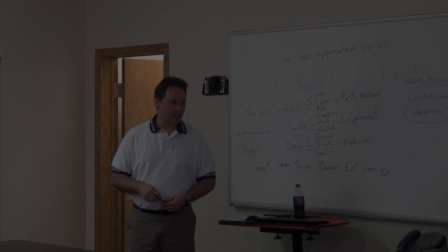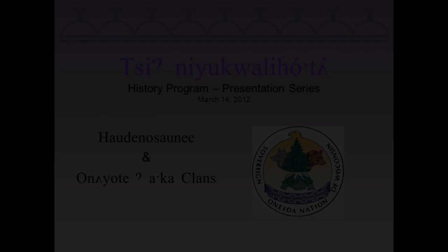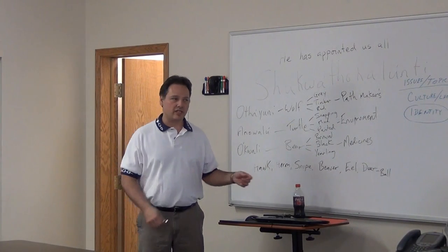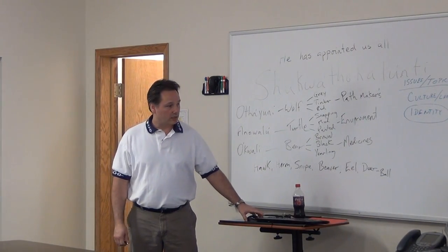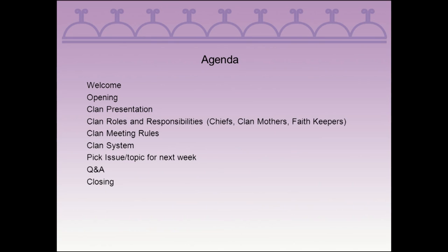It's listed as the Khoda Nishoni or Onyata Aga clans. Onyata Aga is Oneida and the Khoda Nishoni is the word that constitutes all the Six Nations. The agenda is welcome. I'm glad you're here to learn about all the clans. Hopefully you get an idea of what clan you are, which clan you belong to, and the roles and responsibilities of your clan or members of your family.